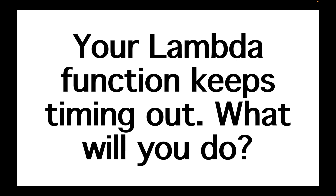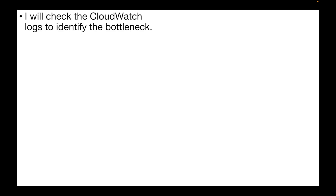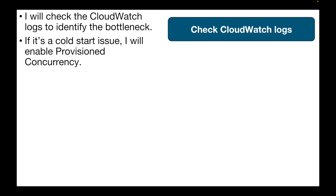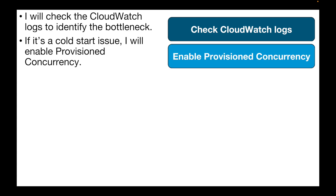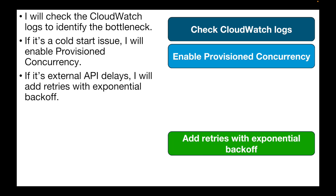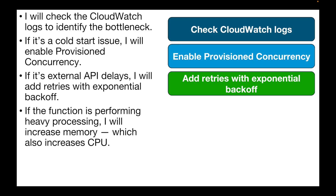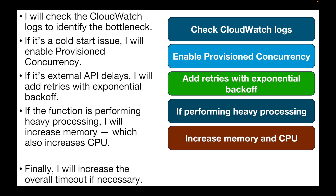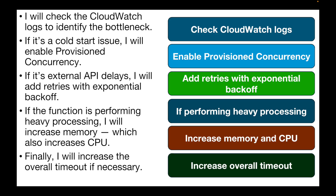The next question is: your Lambda function keeps timing out. What will you do? First, check CloudWatch logs to identify bottlenecks. If it's a cold start issue, enable Provisioned Concurrency. If it's external API delays, add retries with exponential backoff. If the function is performing heavy processing, consider increasing the memory allocation, which also increases CPU. Finally, increase the overall timeout itself if necessary — the maximum is 15 minutes.